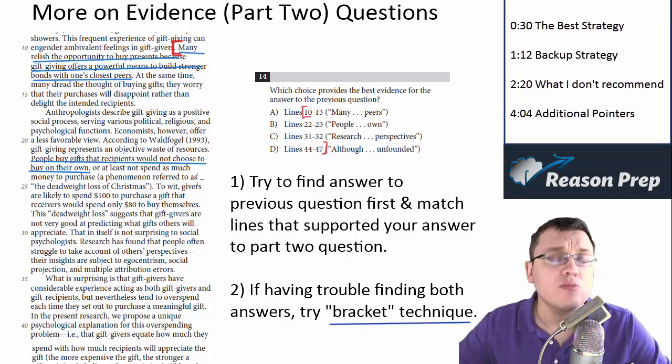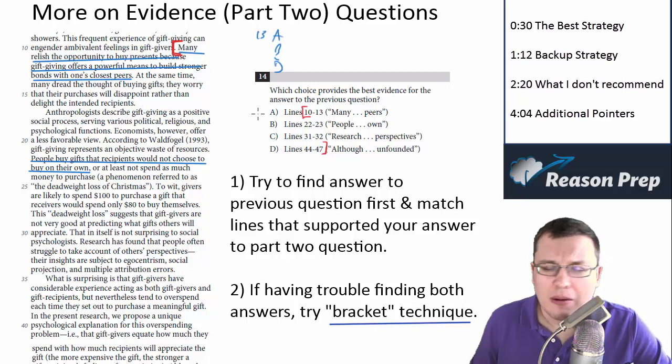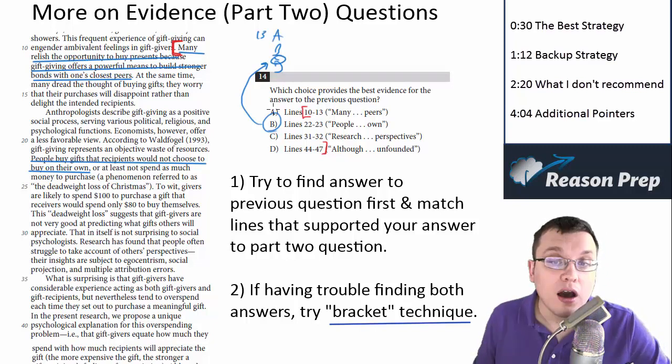Number one, you're reading out of context. You're not reading the entire paragraph around these lines to get a sense of where they fit in the argument and the context. The second issue is you're much more likely to fall into traps if you do it this way, because they're going to have answer choices A, B, C, D for question 13.